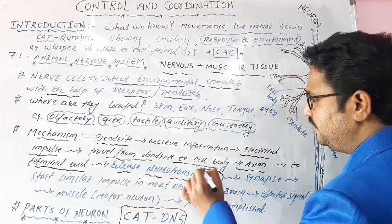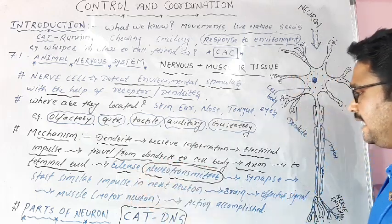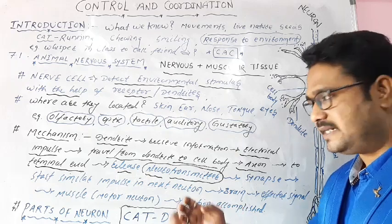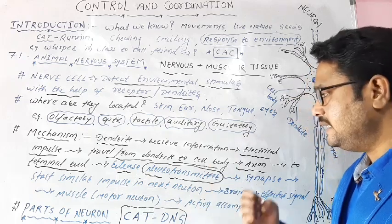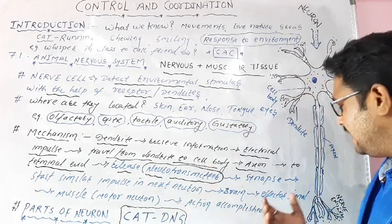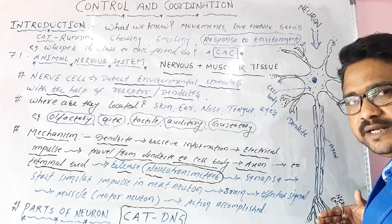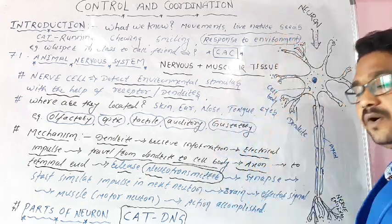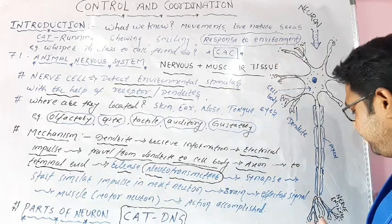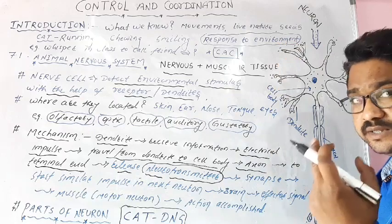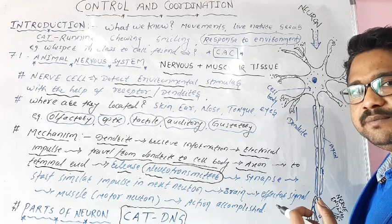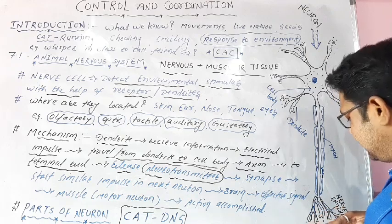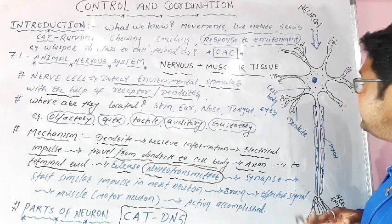They release information in the form of neurotransmitter. Where is this neurotransmitter or chemical information released? It's released from the terminal end so that the dendrites of another neuron receive it from the terminal end of the neuron which received the information.